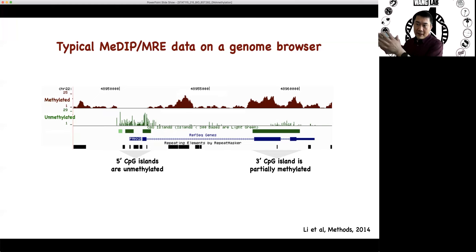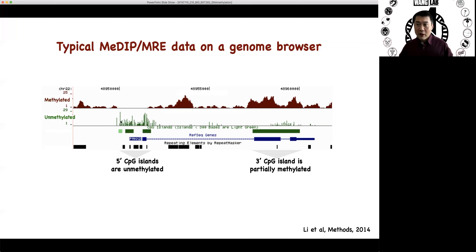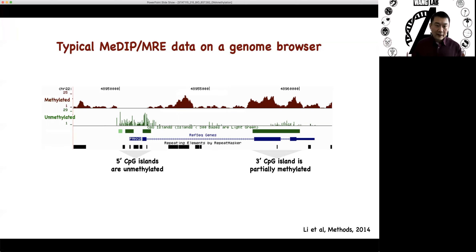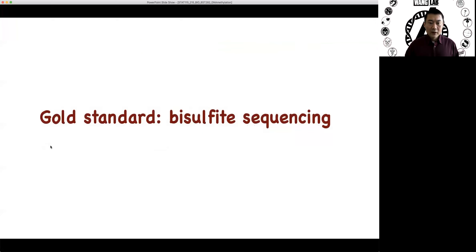One is enriched for mesulated regions, the other enriched for unmesulated regions. The limit here is the recognition site — not all CPGs are within the recognition site of a restriction enzyme. So you can use multiple enzymes to increase this coverage. So this is also a typical technology.